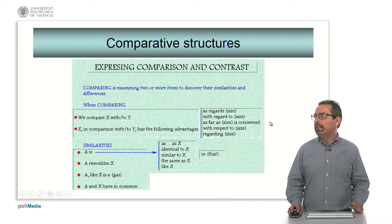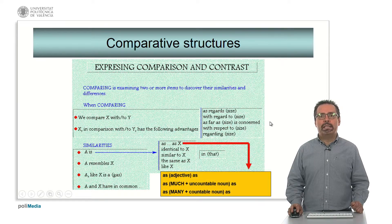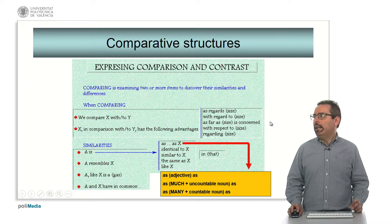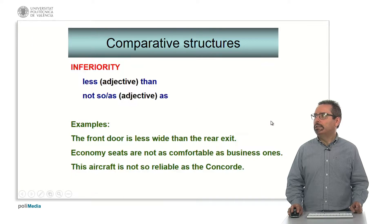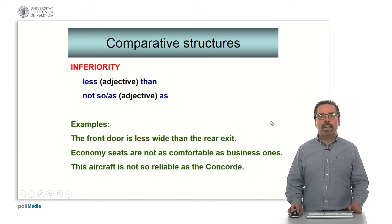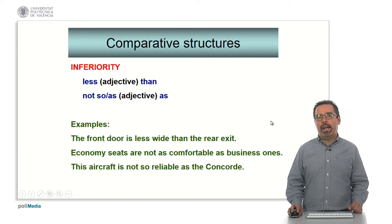It is important to note that when we are using 'as...as', in the middle we use an adjective. If we are using a noun, we make a difference between 'much' for uncountable nouns or 'many' for countable nouns. To express inferiority in English we use 'less' plus the adjective plus 'than', or 'not so...as' plus the adjective plus 'as'. Remember to use the right particle: 'than' or 'as'.